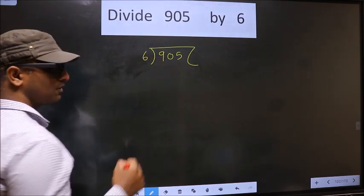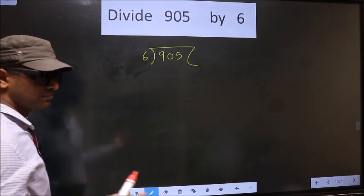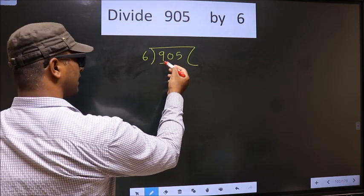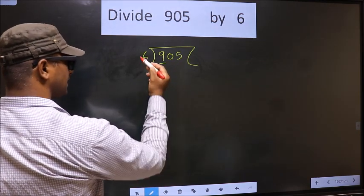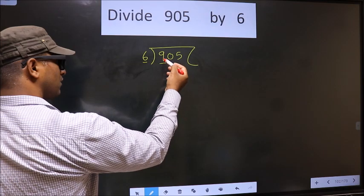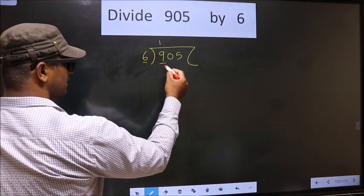Now here we have 9. The number closest to 9 in the 6 table is 6 times 1 equals 6.